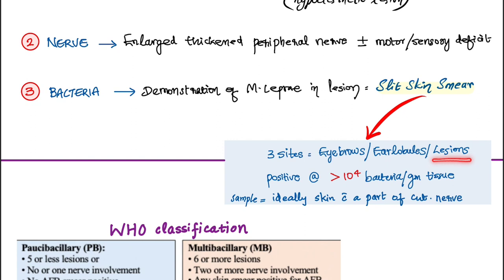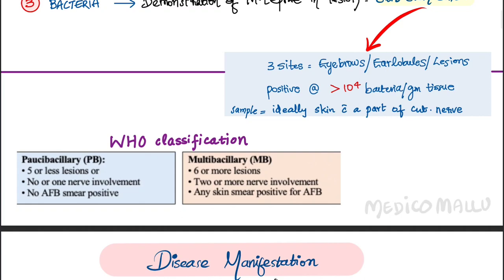From these sites we can take the slit skin smear, and it is considered positive when there is more than 10 to the power 4 bacteria per gram of tissue. An ideal sample is a skin biopsy that includes part of the cutaneous nerve.